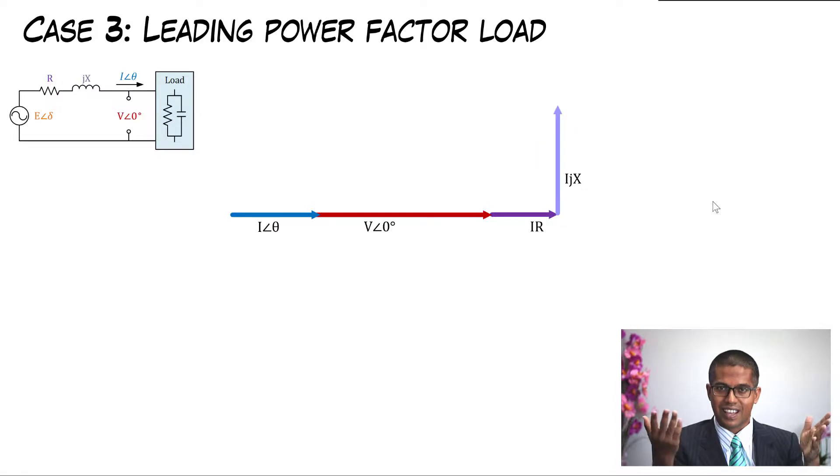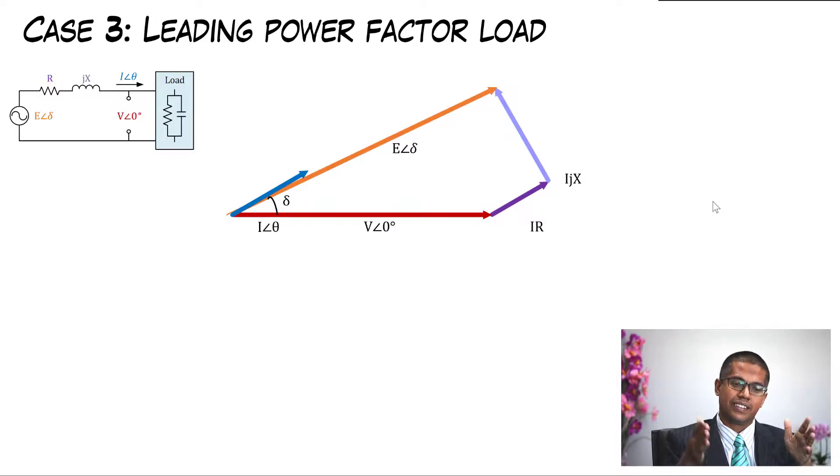Yes, as you can guess, now the current is moving up. So the voltage drop is rotated counterclockwise and then we got our E like that. But I'm not going to solve this for you. I leave this for you to derive the equation between E and V.